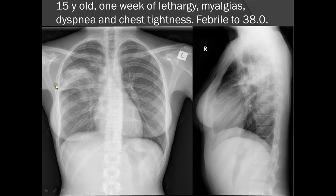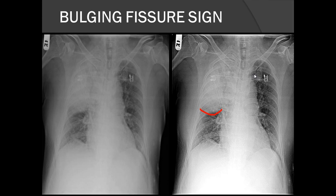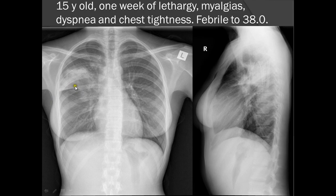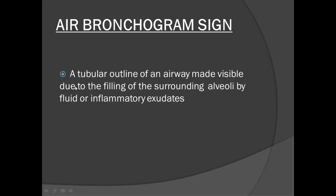Consolidation above the right horizontal fissure is always in the right upper lobe, confirmable on lateral view. The classical bulging fissure sign is seen in Klebsiella pneumoniae, where excessive pus secretion causes a convex rather than normal horizontal fissure. The air bronchogram sign is a tubular outline of airways made visible by filling of surrounding alveoli with fluid or inflammatory exudate.